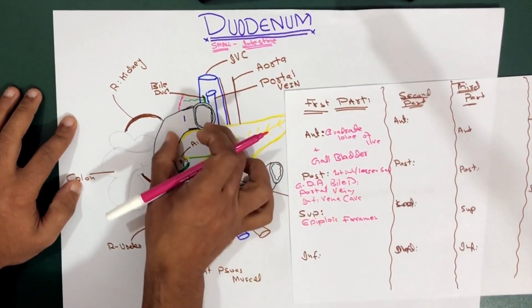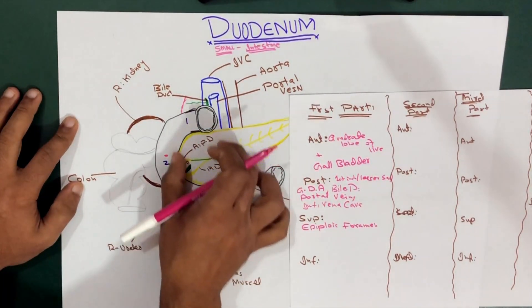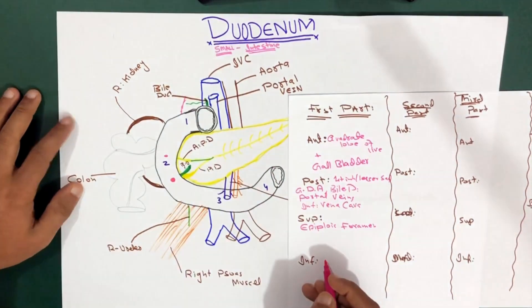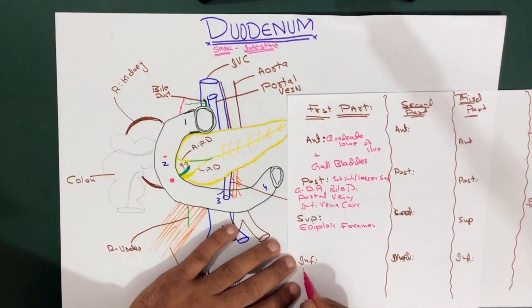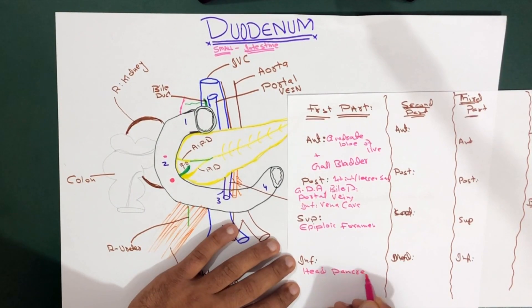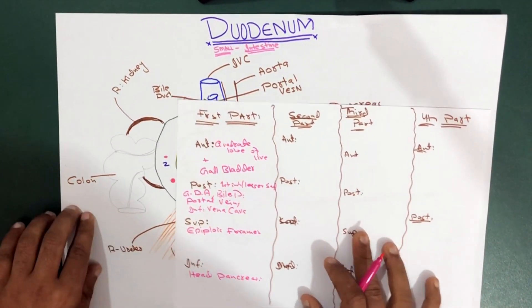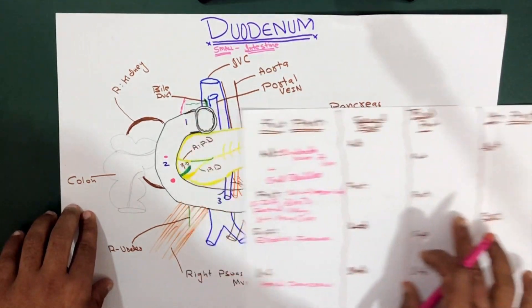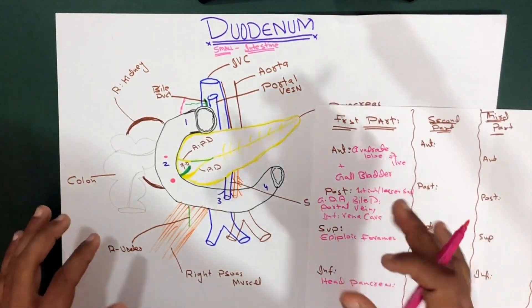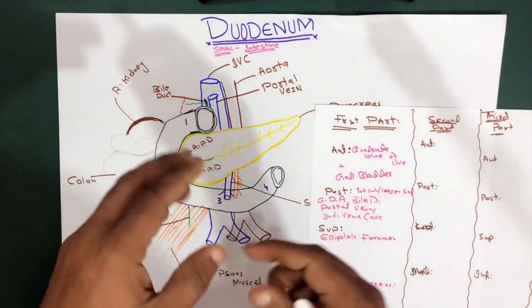On the inferior side, we have the head of the pancreas. So we can say the head of the pancreas is on the inferior side of the first part. Now we're going to talk about the second part of the duodenum.